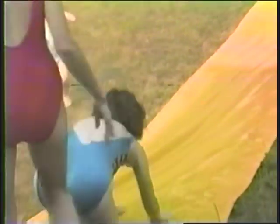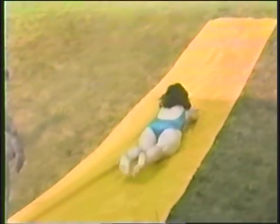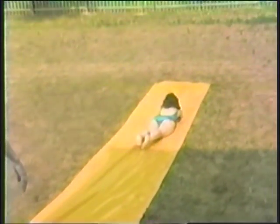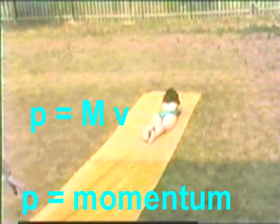The slip and slide provides a frictionless surface for which to do experiments. For example, we can test momentum conservation. Momentum is given by the mass times the velocity. So if you have a big mass, you will have a big momentum even if the velocity is small.